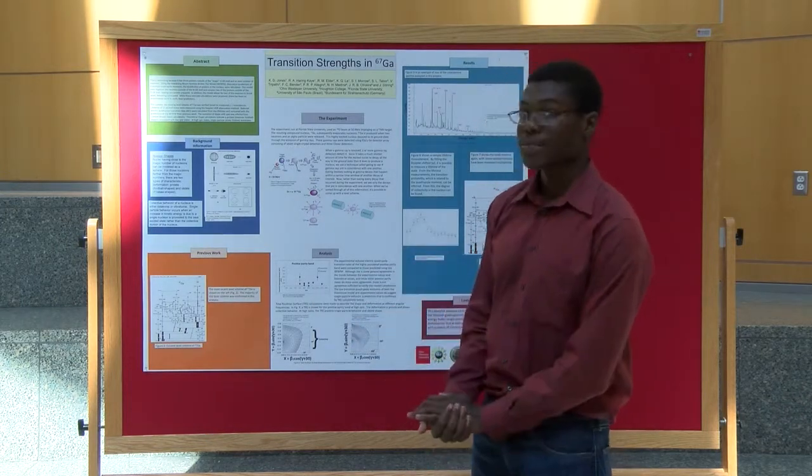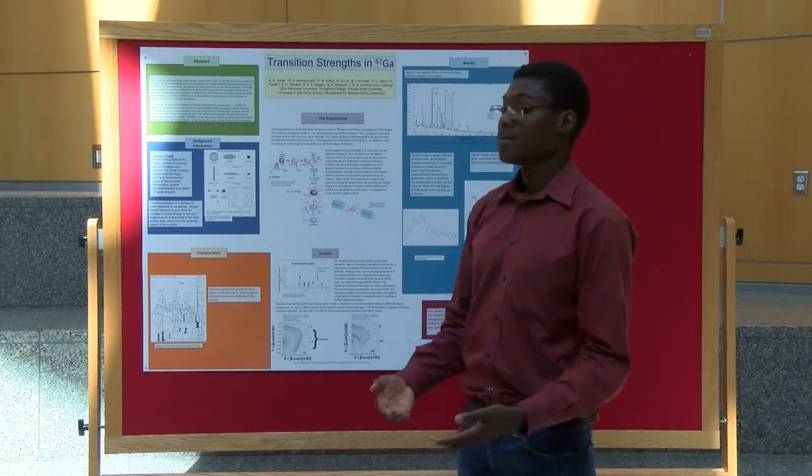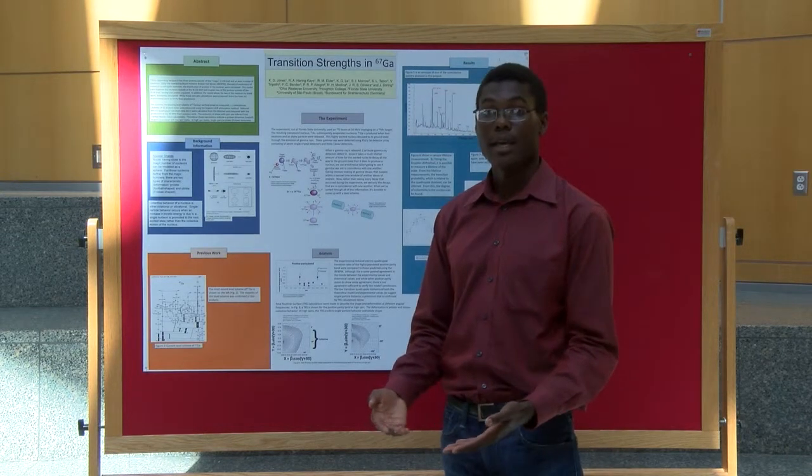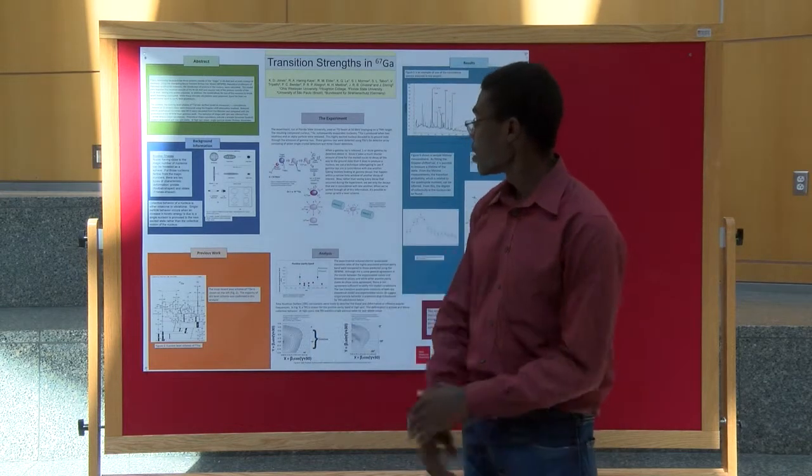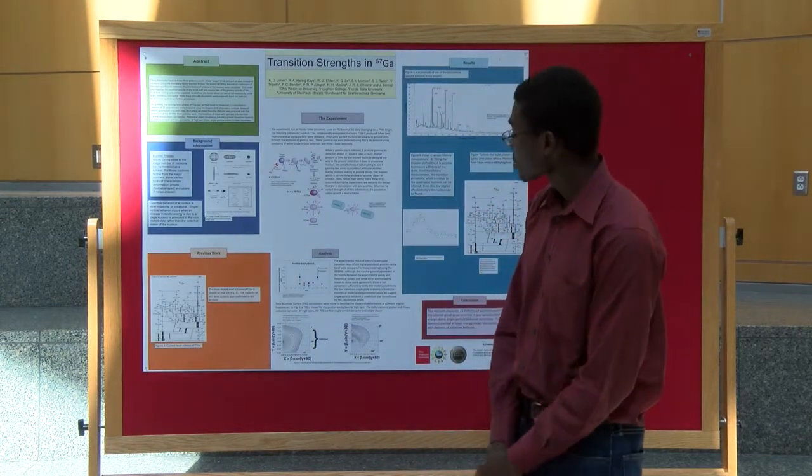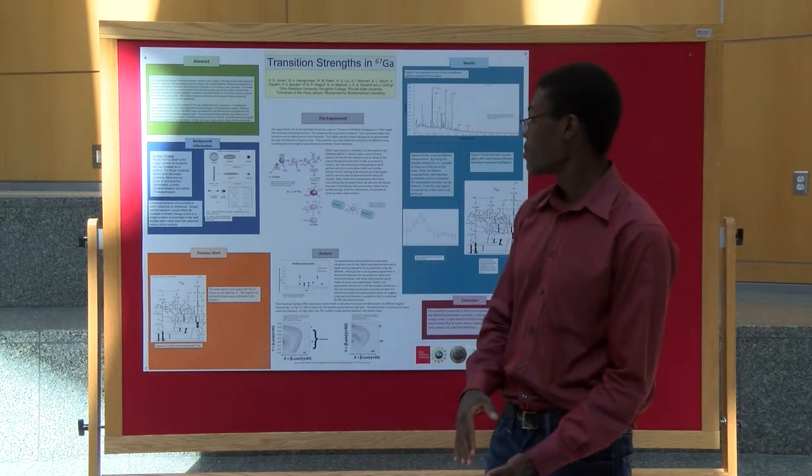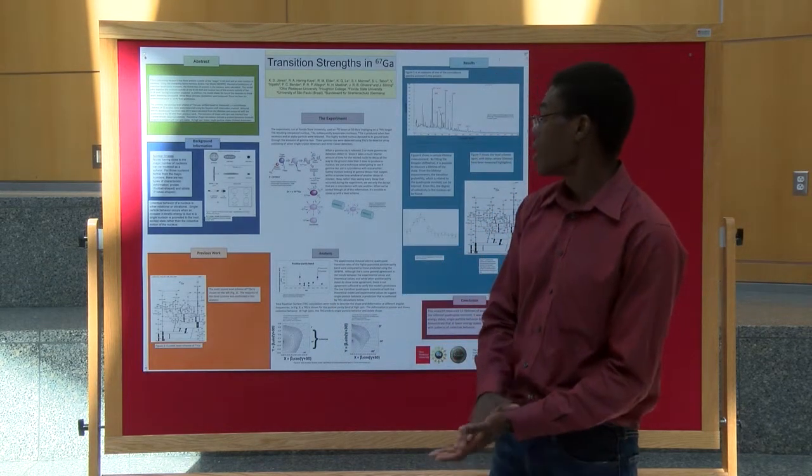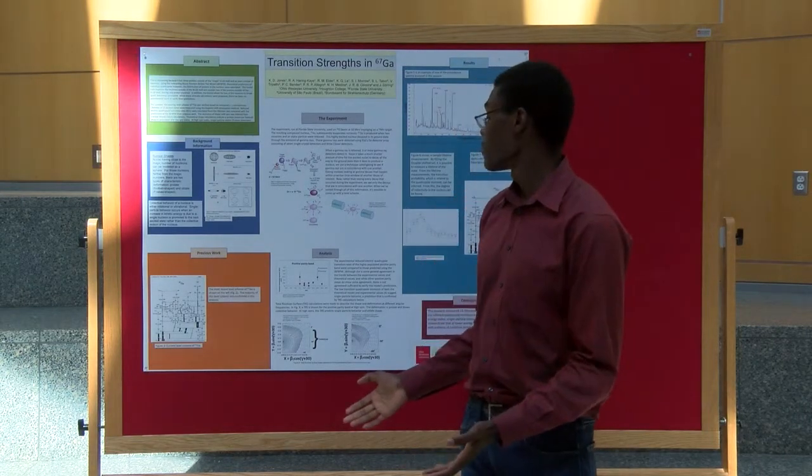In red are the theoretical predictions using that same model that predicted the spherical symmetry and the deformation in the nucleus. In blue are our experimental values. You can see that although both predict that there is a small transition moment in the nucleus, they do not agree, unfortunately.